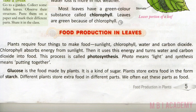Plants require four things to make food: sunlight, chlorophyll, water and carbon dioxide. Chlorophyll absorbs energy from sunlight, then it uses this energy and turns water and carbon dioxide into food. This process is called photosynthesis.